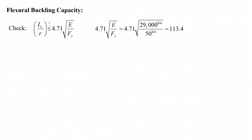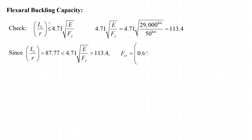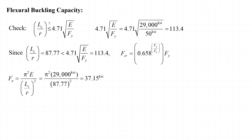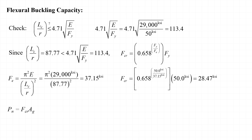Now that we have the governing KL/r, we can calculate the flexural buckling strength. 4.71√(E/F_y) = 113.4, and since KL/r = 87.77 is less than 113.4, F_cr = 0.658^(F_y/F_e) × F_y. F_e = π²E / (KL/r)² = 37.15 ksi, substituting KL/r = 87.77. It then works out that F_cr = 28.47 ksi. The nominal capacity P_n = F_cr × A_g.